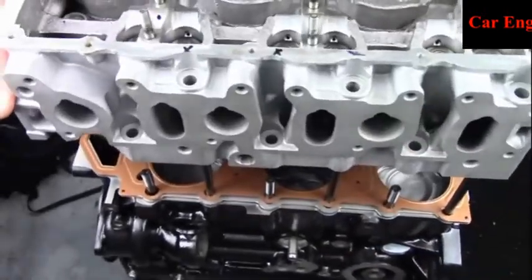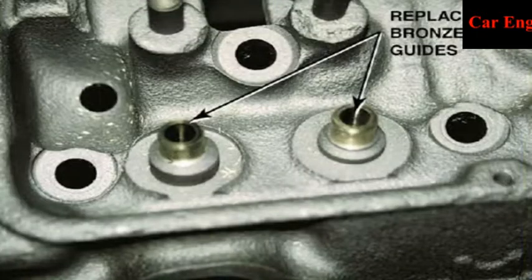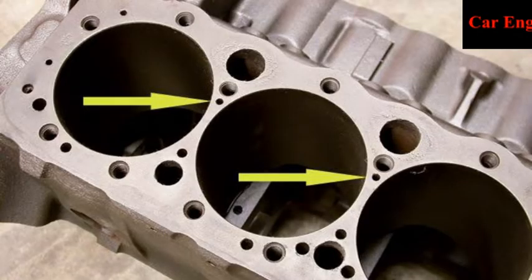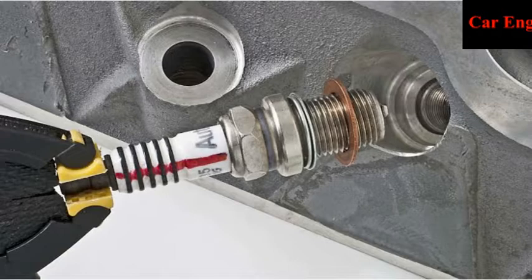The cylinder head contains a combustion chamber above each cylinder. It also contains valve guides, valve seats, ports, coolant jackets, and threaded holes for spark plugs. It incorporates passages for the flow of cooling water.